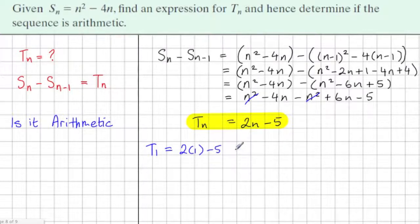That would be 2 times 1 minus 5, which is 2 minus 5, which is minus 3. Term 2 would be 2 times 2 minus 5, that's 4 minus 5, minus 1. Term 3 would be 2 times 3 minus 5, that's 6 minus 5, which is equal to 1.